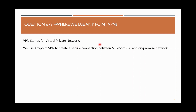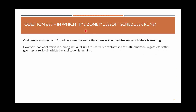In Anypoint Platform, you configure Anypoint VPN by specifying the details about your on-premise environment. It then establishes connectivity between your Mule runtime in the MuleSoft VPC — Virtual Private Cloud — and your on-premise network.